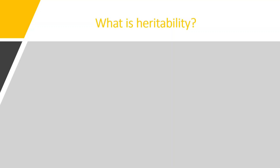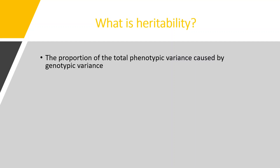I will start with heritability. I have already made detailed videos on the definition, concepts, and methods to estimate heritability in a population, and I will provide links in the description. Heritability can be defined as the proportion of the total phenotypic variance caused by the genotypic variance, measured in a population. It tells us how much of the total phenotypic variance is caused by genetic differences between animals. The range of heritability is between 0 and 1.